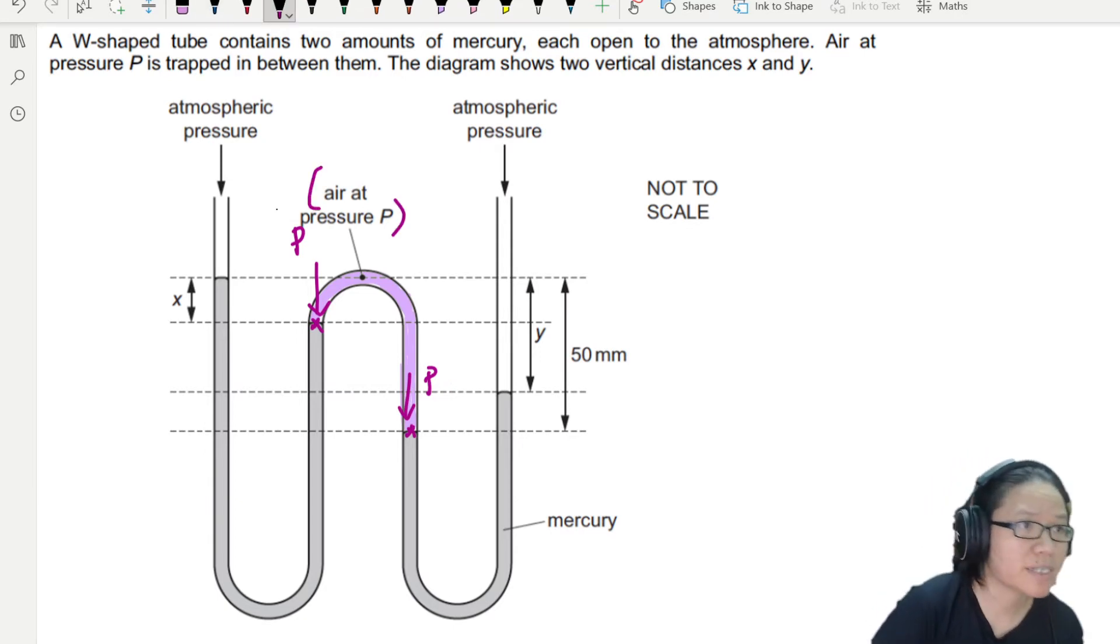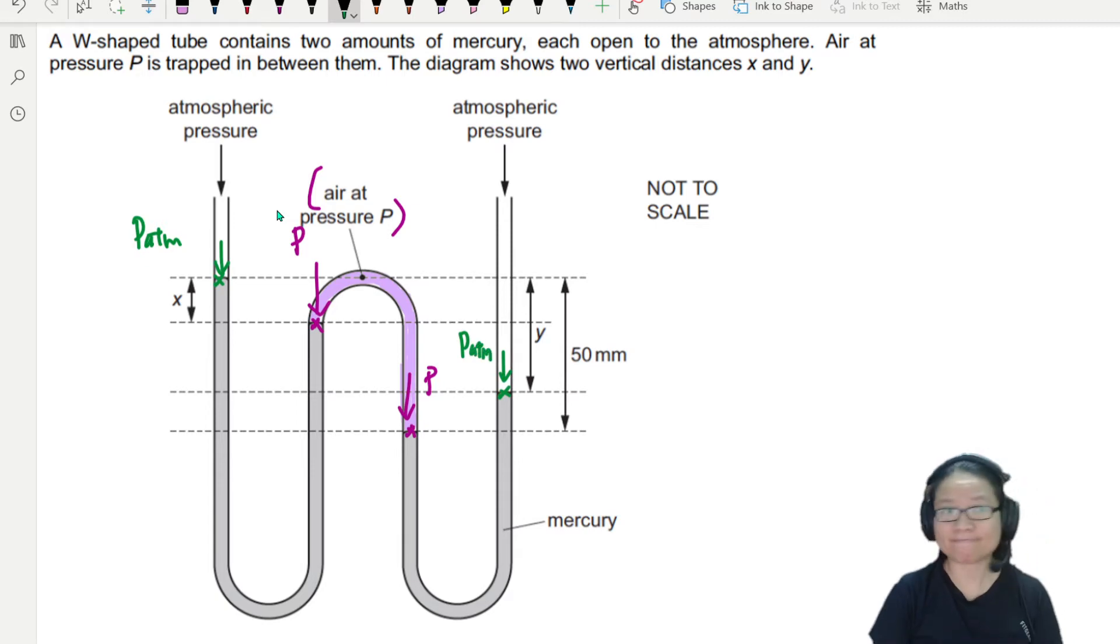The other two ends is open to our good old atmosphere. So here, this point here will be atmospheric pressure, and this point here will be atmospheric pressure. The diagram shows two vertical distances, X and Y. So we have X here, and we have Y here.